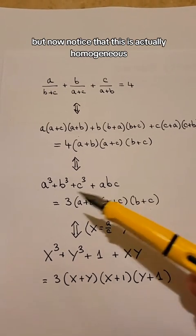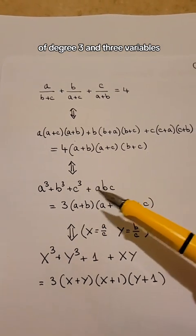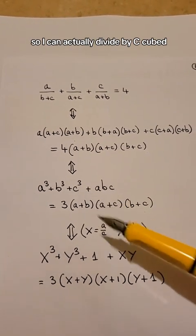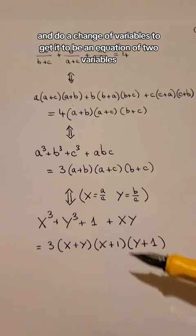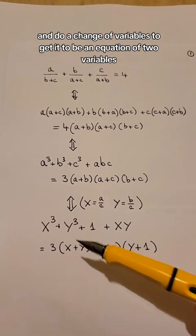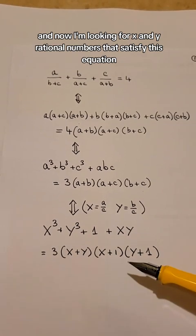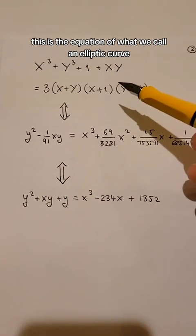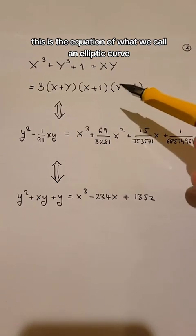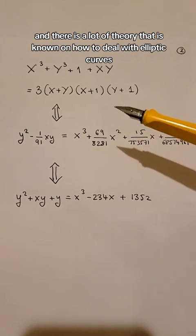But now notice that this is actually homogeneous of degree three in three variables, so I can actually divide by c³ and do a change of variables to get it to be an equation of two variables. And now I'm looking for x and y rational numbers that satisfy this equation. This is the equation of what we call an elliptic curve, and there is a lot of theory that is known on how to deal with elliptic curves.